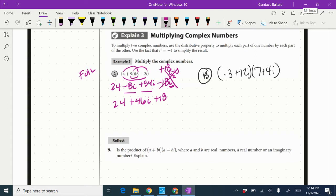So I'm just going to, when I see the i squared, I'm going to flip the sign. So 24 plus 18, when I combine these together, would be 42 plus 46i.